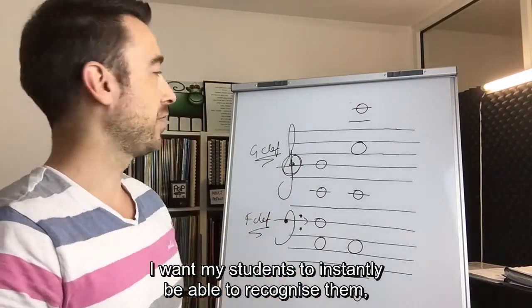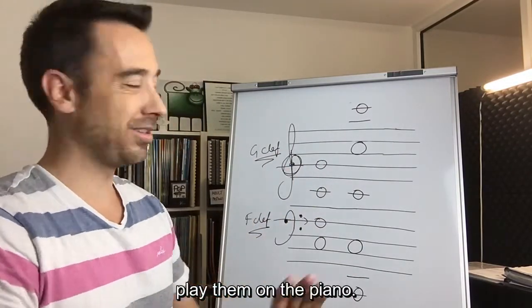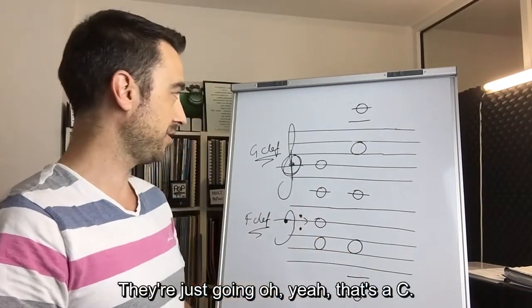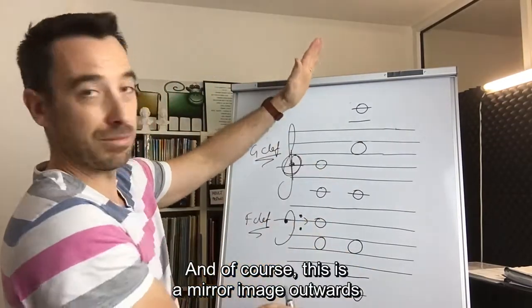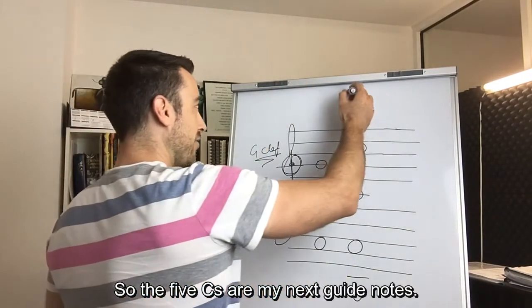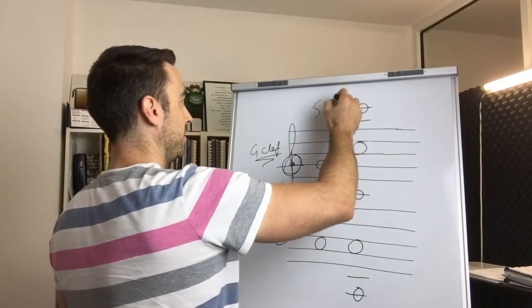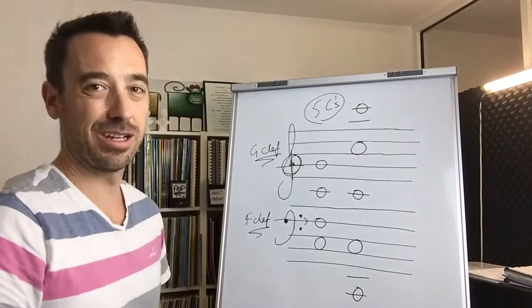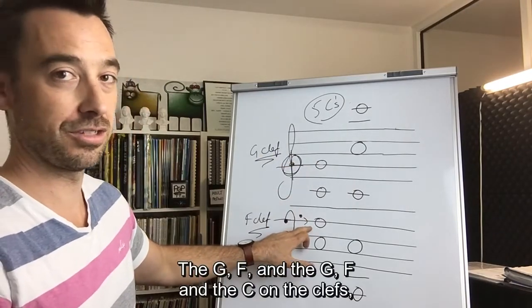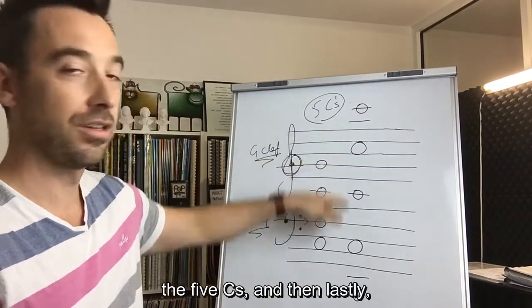I want my students to instantly be able to recognize them, play them on the piano. They're not thinking all cows or anything like that. They're just going, oh yeah, that's a C. And of course, this is a mirror image outwards, if you haven't become aware of that yet. So the five Cs are my next guide notes—the G, F, and the C on the clefs, the five Cs.